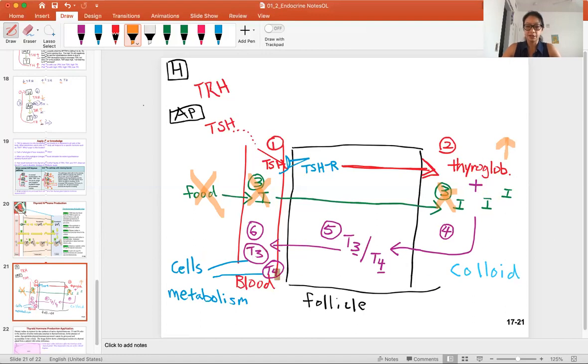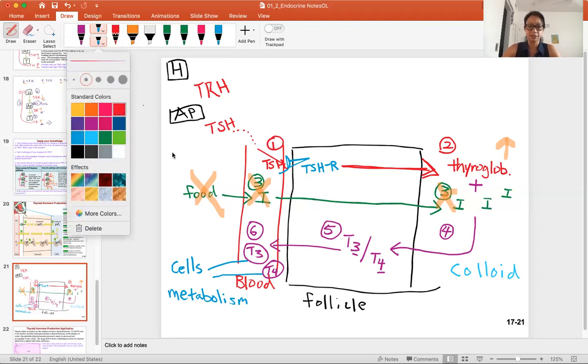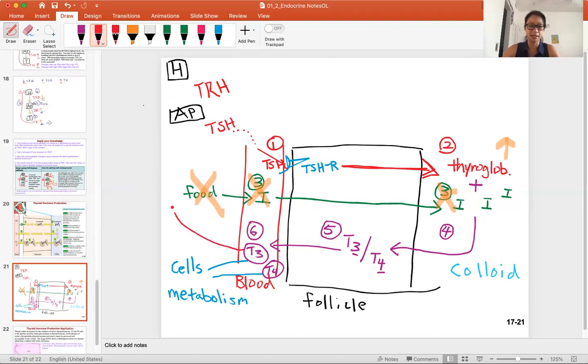Thyroglobulin will build up in the colloid. Let's also look at this idea of feedback. The T3 and T4, once there is enough, that is what's feeding back in the blood, circulating back to the pituitary and hypothalamus. This does the negative feedback to turn off TSH.